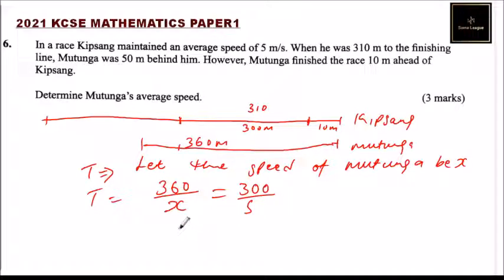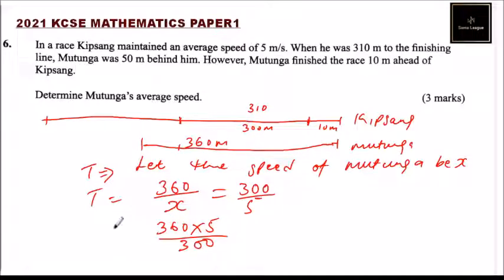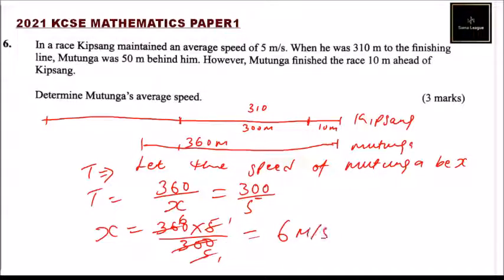We cross multiply to get x equals 360 multiplied by 5, divided by 300. Simplifying: 360 times 5 is 1800, divided by 300 gives 6. So x equals 6 meters per second. Since x is Motunga's speed, Motunga's average speed is 6 meters per second.